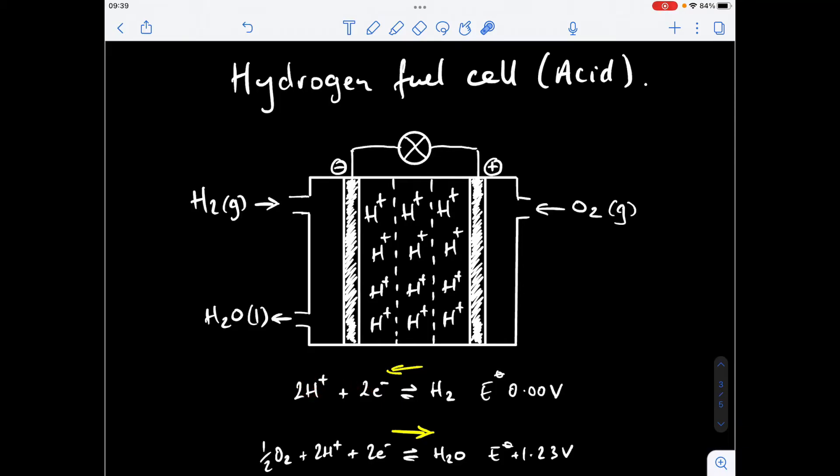The H+ ions generated will just become part of this electrolyte but importantly the electrons will start to flow around the external circuit. Remember electrons flow from negative to positive. We've got a movement of electrons therefore we've generated a current. That could power whatever component is going to be powered by this flow of electrons.